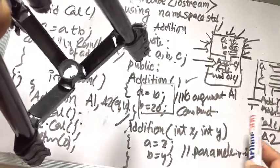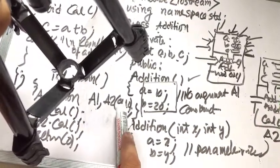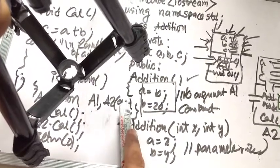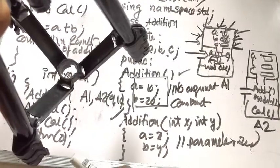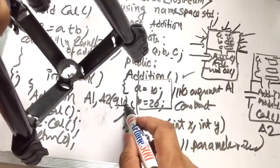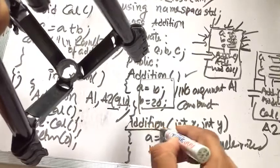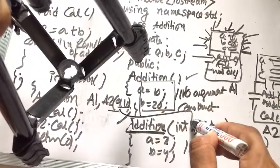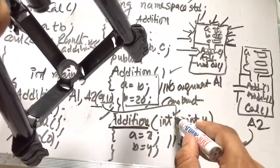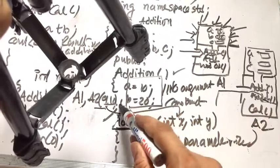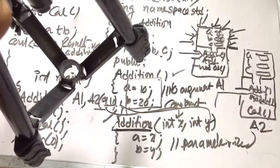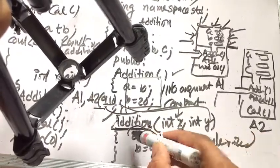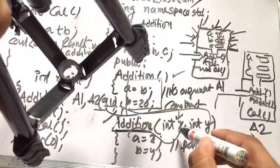When we create a2 with parameters 9 and 10, the parameterized constructor is called. 9 is copied to x and 10 is copied to y. Then x is transferred to a and y is transferred to b.